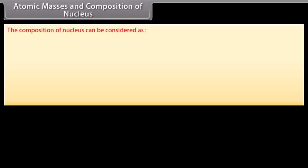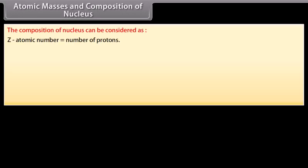The composition of nucleus can be considered as: Let Z be atomic number which is equal to number of protons. Let N be neutron number which is equal to number of neutrons. Let A be mass number which is equal to Z plus N, which is equal to total number of protons and neutrons.